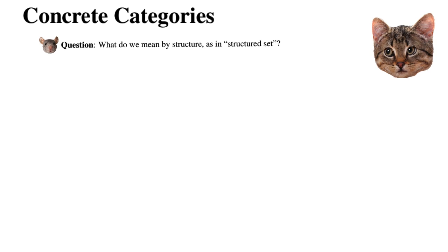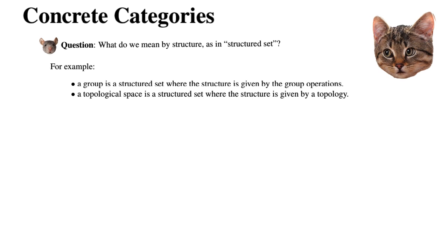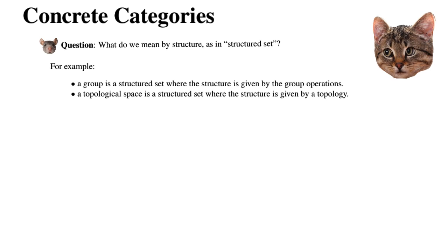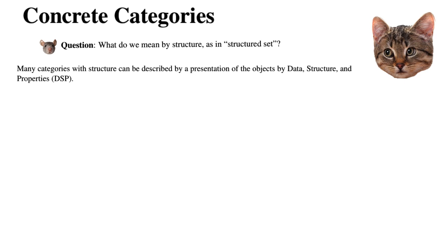We are going to discuss concrete categories. The motivating question is: what do we mean by 'structure,' as in a structured set? For example, a group is a structured set where the structure is given by the group operations. A topological space is a structured set where the structure is given by the topology. Many categories with structure can be described by a presentation of the objects by data, structure, and properties — a DSP.